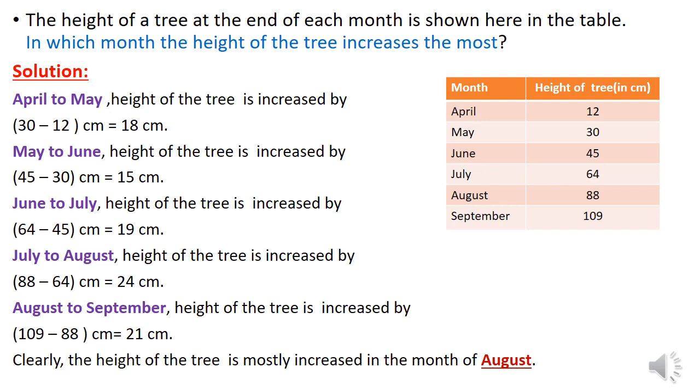In April the height of the tree is 12 cm. In May it is 30 cm. In June it is 45 cm. In July it is 64 cm. In August it is 88 cm. In September it is 109 cm. Now to calculate in which month the height of the tree increases the most.